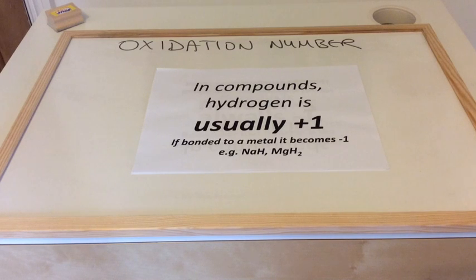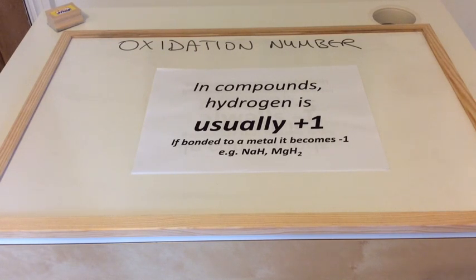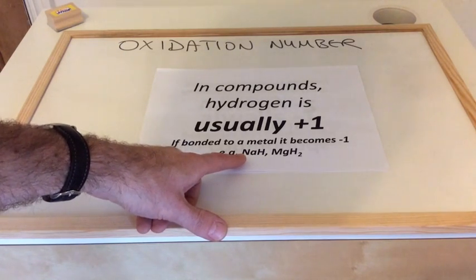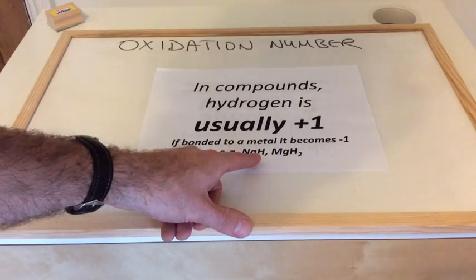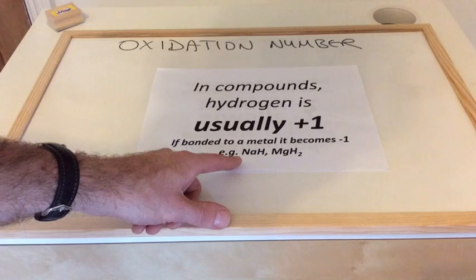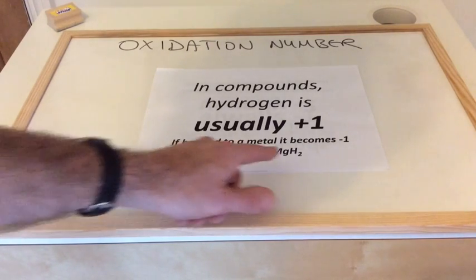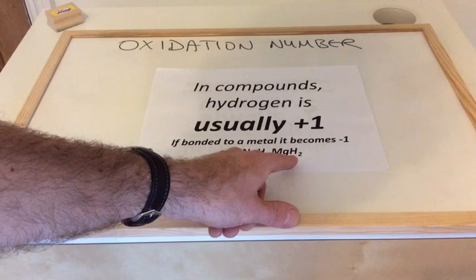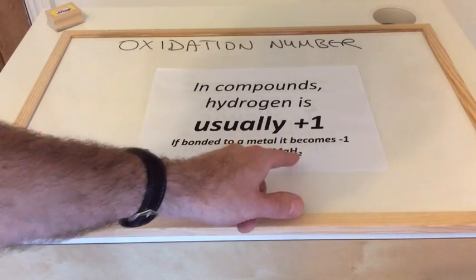We've got a rule for hydrogen. In compounds, hydrogen is usually plus one. The only reason it would change to minus one is if it was bonded to a metal, since metals always carry positive oxidation numbers. For example in metal hydrides such as NaH and MgH2: sodium is a group one element in a compound, so it's plus one, and so the hydrogen must be minus one to maintain neutrality. For MgH2, magnesium is group two so it's plus two, meaning the two hydrogens each carry minus one.